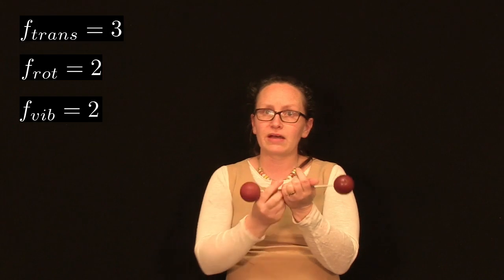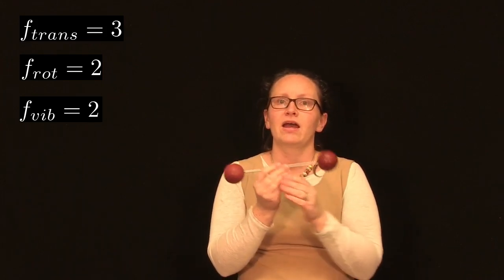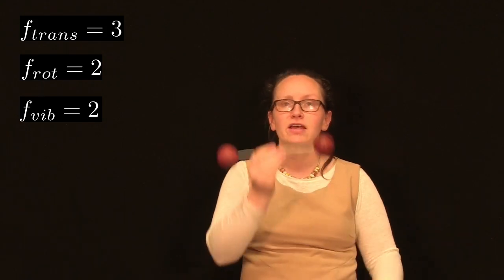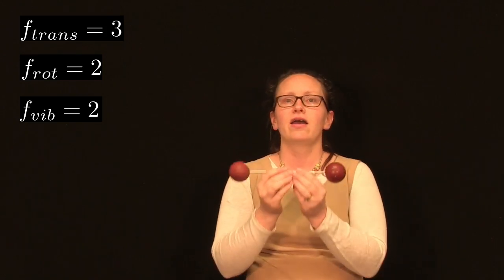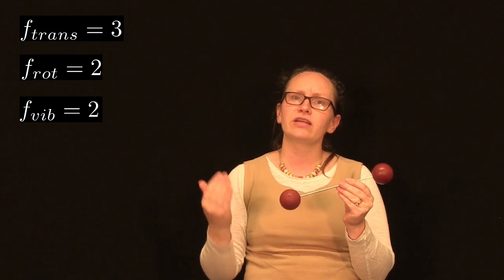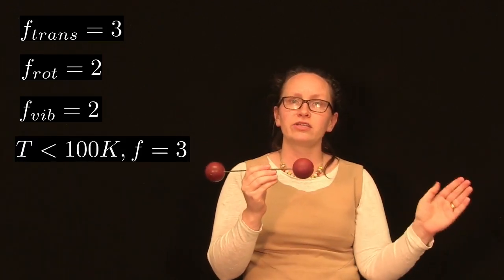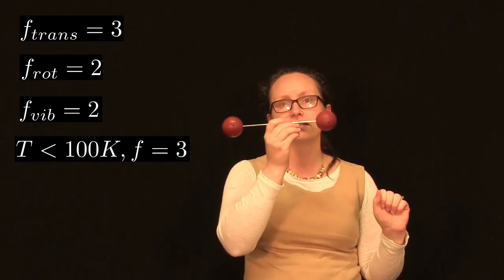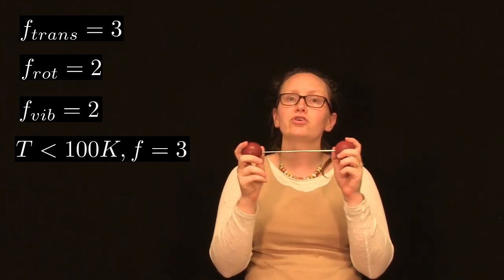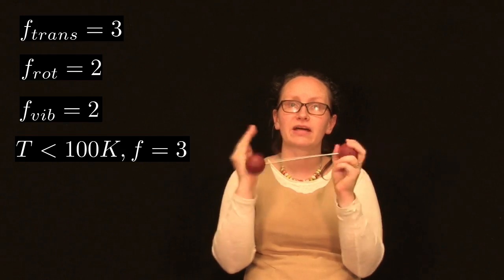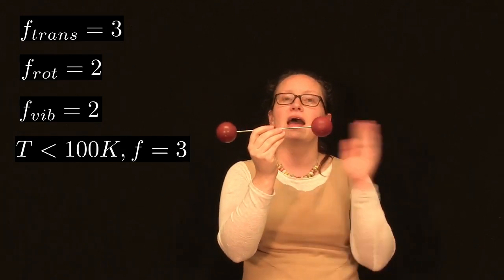An important point about degrees of freedom is that they depend on temperature. At low temperatures — below 100 Kelvin — the particles can move, so they all have translational kinetic energy. But when they collide with other particles, they don't have enough energy to start those other particles rotating. So at low temperatures, below about 100 Kelvin, these diatomic molecules only have the three translational degrees of freedom. They also do not have enough energy to start other particles vibrating.